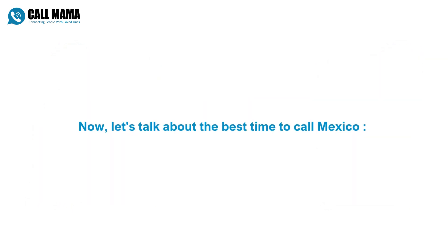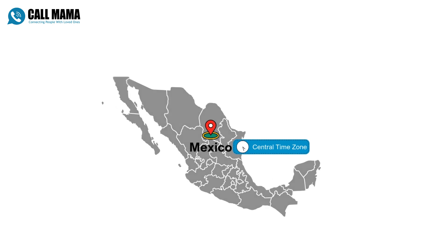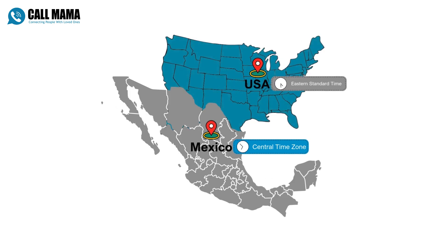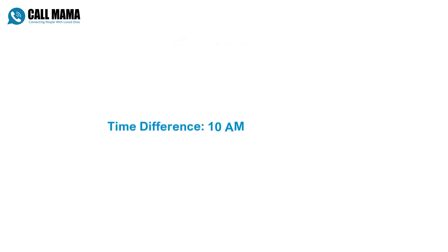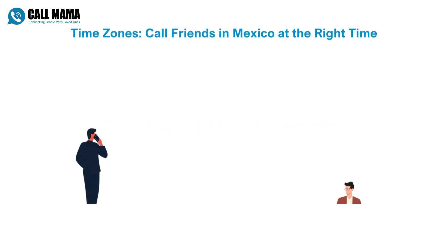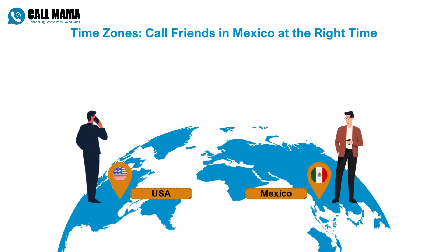Now let's talk about the best time to call Mexico. Mexico is in the Central Time Zone, which is one hour behind Eastern Standard Time. So if it's 10am EST, it's 9am CT. Keeping this time difference in mind will help you avoid calling your friends and family in Mexico at inconvenient times.